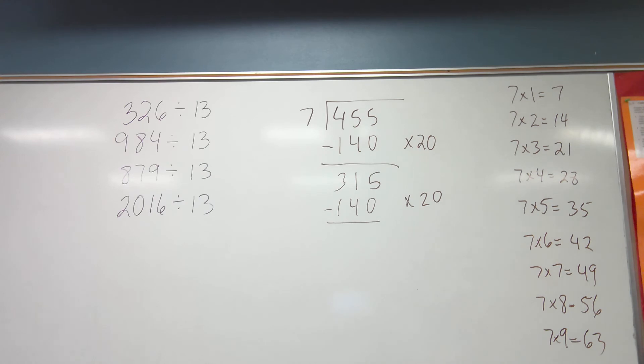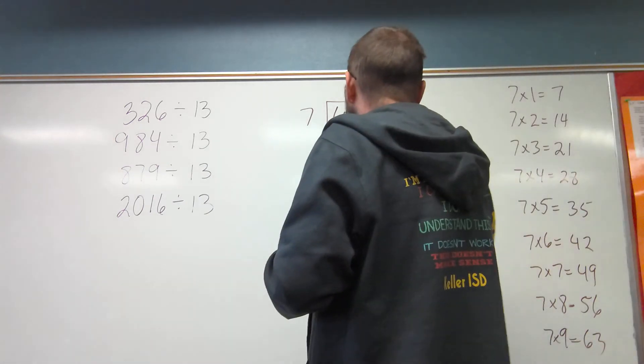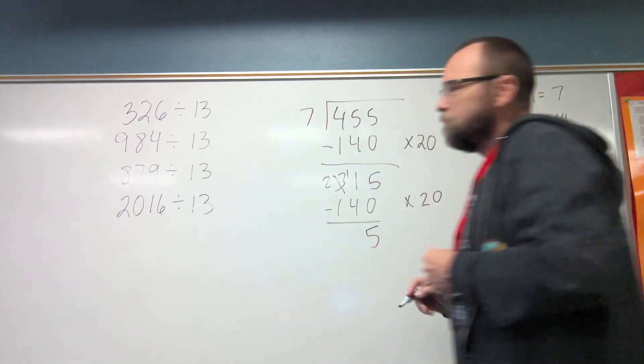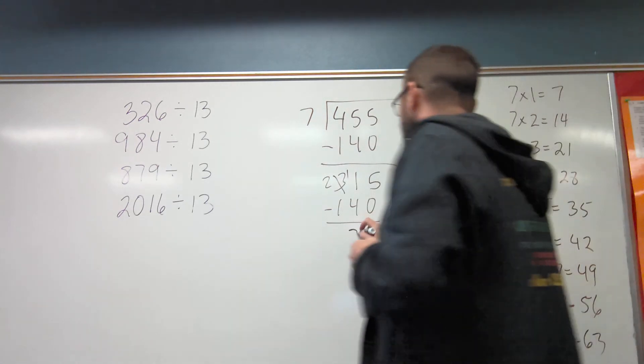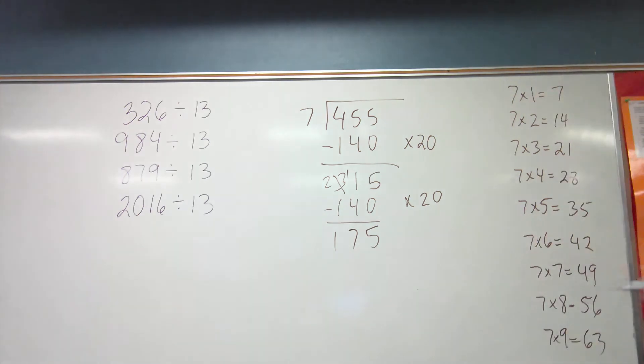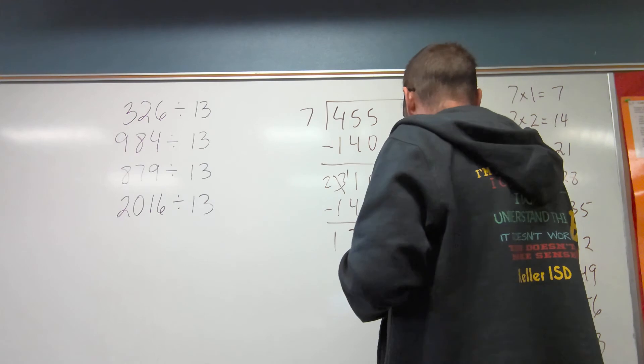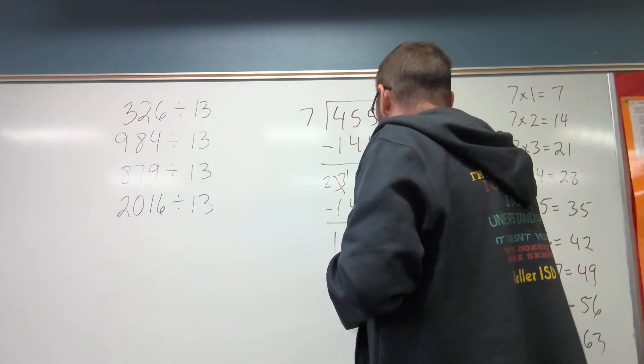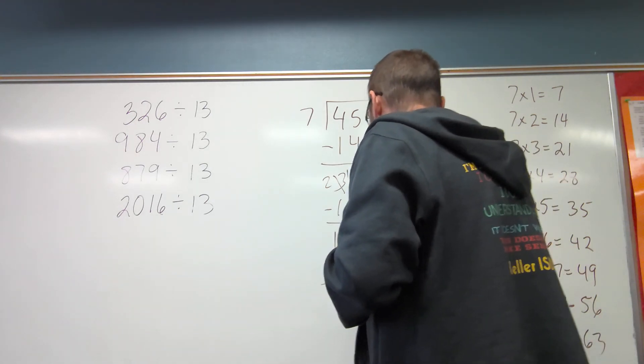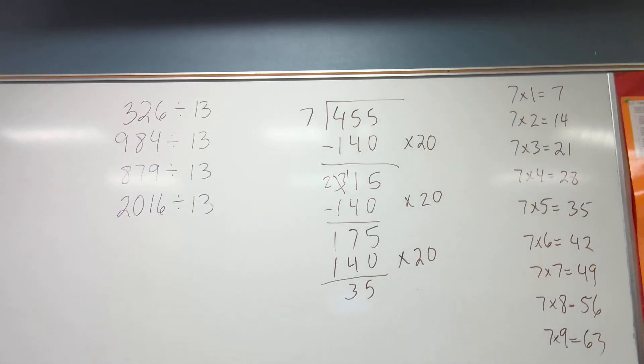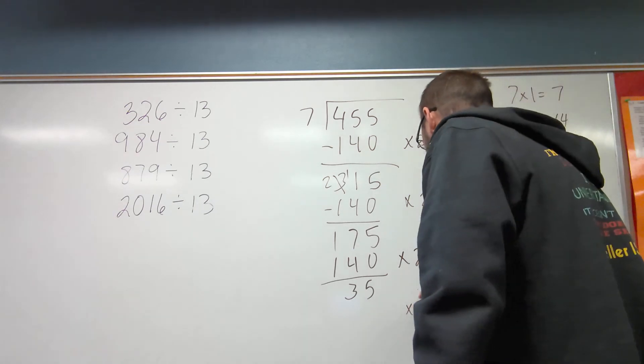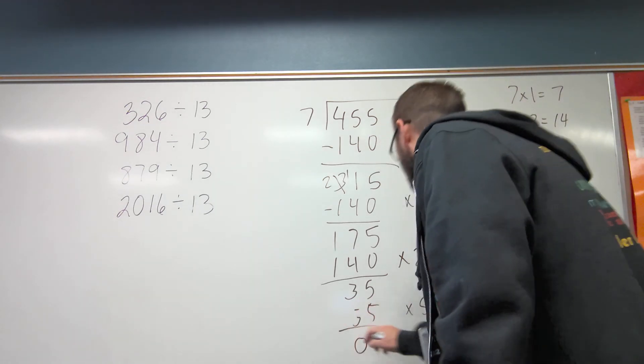So I'm going to get 345. So I can times it by 20 again, which is 140. I'm going to subtract. And so I get 175. You can do it again. I can multiply by 20, and I have 140, and that's going to give me 35, and I can look over here at the hardest part of division, and I see 35 is right here. And so that's 5, and that's 35, subtract, and I get 0. Then I just have to add these up, 20, 40, 65, and that works.